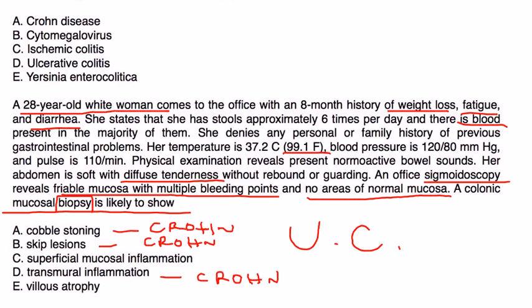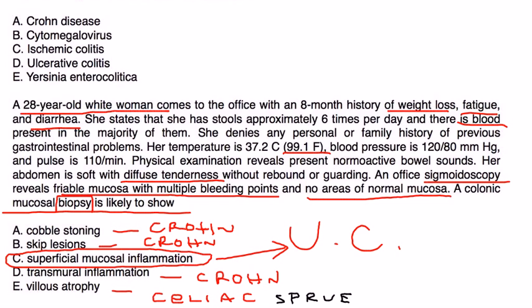Villus atrophy is seen when you do a biopsy of the colon in someone with celiac sprue, which is a different condition altogether. Even if you didn't know the answer, by process of elimination it's C, which is the biopsy finding in ulcerative colitis. You don't have the full thickness of the bowel wall affected - just the superficial mucosa is inflamed in ulcerative colitis.